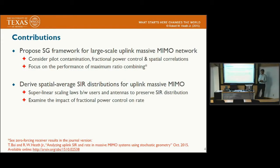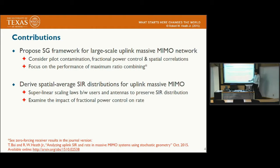In our work, we propose a stochastic geometry framework to analyze large-scale massive MIMO networks in the uplink. We consider the effect of pilot contamination, fractional pilot control, and also spatial correlation between base station antennas. We focus on the performance of maximum ratio combining, but we also have further results on zero-forcing. We derive a spatially averaged SINR distribution in very simple form, and based on the closed-form expression, we show that to maintain the same SINR distribution per user, we need a superlinear scaling law between the number of users and antennas. We also use numerical results to examine the impact of fractional power control on the per-user rate.